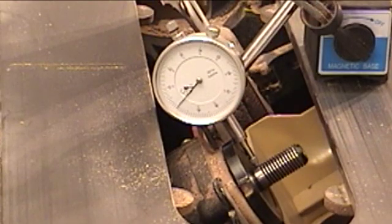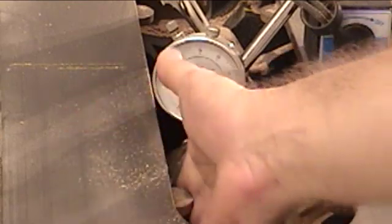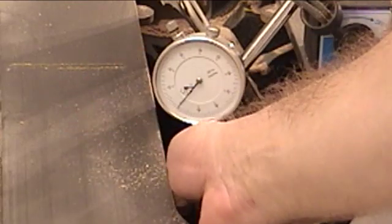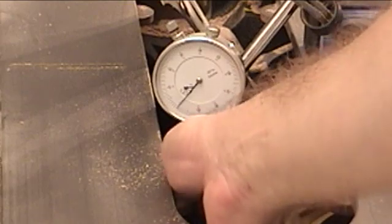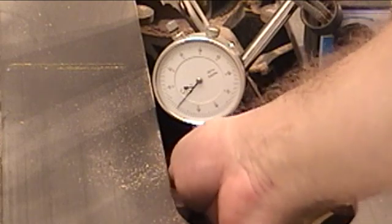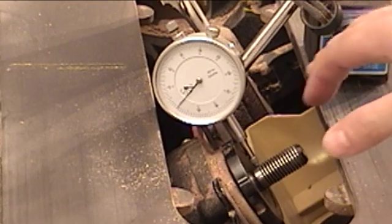Next thing you want to do is rotate the arbor by spinning the belt. And you should see no movement or virtually no movement in the dial indicator needle. And for my table saw I don't see any at all. So I know I have no run out on my arbor.